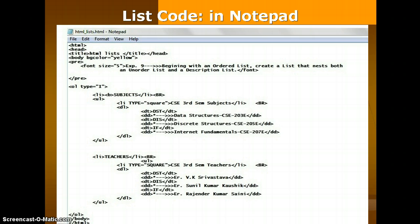In this example, for the ol tag we are using some type attributes with the ordered list. Type is equal to i. We can also use 1, capital A, small a, capital I, or small i. The default is 1, which means the list items will be numbered with numbers. If we use type equal to capital A, the list items will be numbered with uppercase letters.